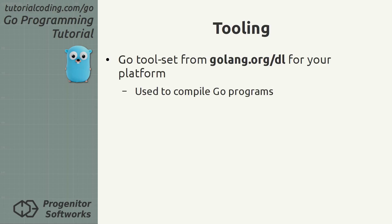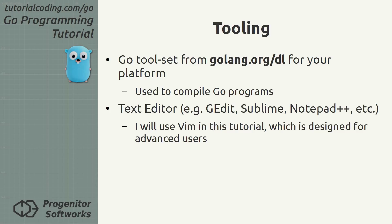Tooling. To get started, the Go tool is needed. This can be downloaded from golang.org/dl and is needed to compile programs. A text editor is needed to edit source files — there are plenty of choices, though I suggest one that supports Go syntax highlighting to improve the coding experience. I personally use the Vim editor, but because it has a fairly steep learning curve, I only recommend it to more advanced users.